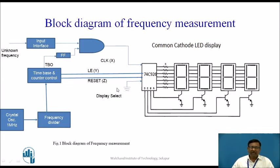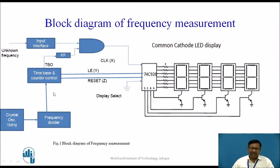Let us see how to measure the unknown frequency. Unknown frequency is applied here and given to the block called the input interface, wherein the unknown frequency signal is converted into appropriate signal levels. Then it is given to one input of an AND gate. The other input of the AND gate comes from the time base output. One megahertz is divided by a count value such that we get one hertz, which is given to a flip-flop and comes out as 0.5 hertz. That means the on period will be one second and the off period will be one second, whereas in a one hertz signal the on period is 0.5 second and off period is 0.5 second.